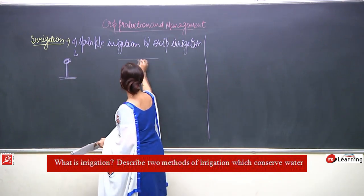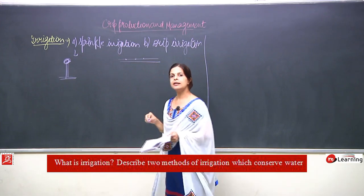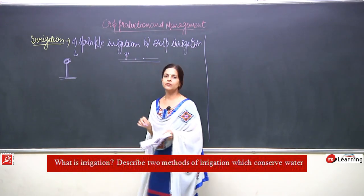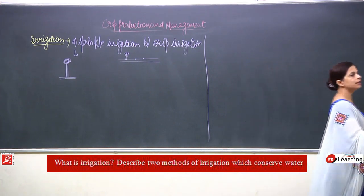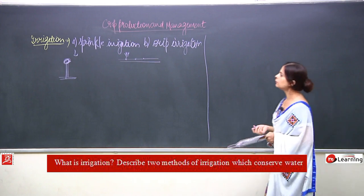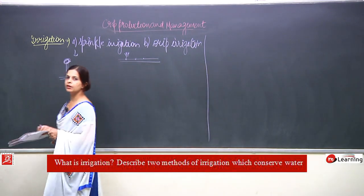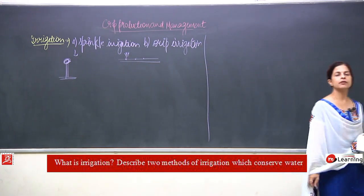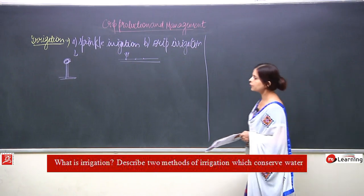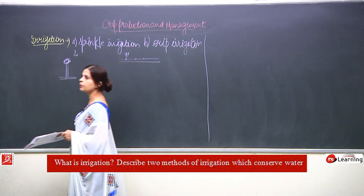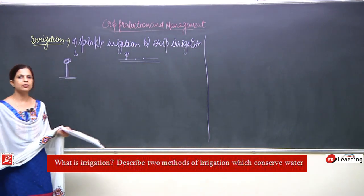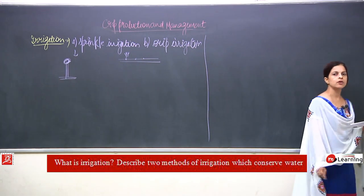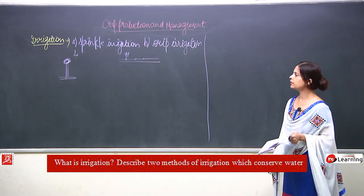Drip irrigation uses a pipe with holes adjusted so that the holes are near the roots of the crops, and water is given in the form of drops. These methods are used where there is scarcity of water — they prevent wastage of water and prevent over-irrigation of crops. So the answer to describing two water-conserving irrigation methods is sprinkler irrigation and drip irrigation.